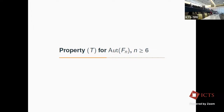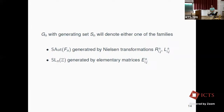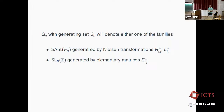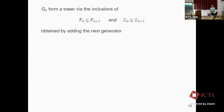The problem is clear: the SDP method works group by group — for one group you make one computation. But here we have an infinite family. So we must do something different. Everything will work simultaneously for SAut(Fn) generated by Nielsen transformations and for SL(n,Z) generated by elementary matrices.